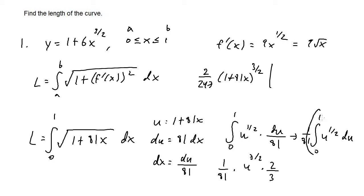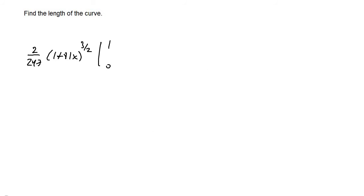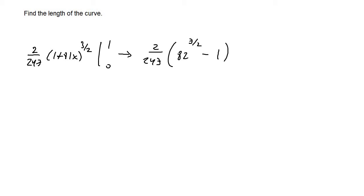Evaluating from 0 to 1, we have 2 over 243 as a constant. Plugging in x equals 1 gives 1 plus 81 equals 82, so 82 to the 3 halves. Plugging in x equals 0 gives 1, and 1 to the 3 halves is just 1. So the final answer is 2 over 243 times (82 to the 3 halves minus 1).